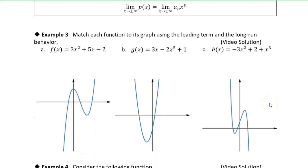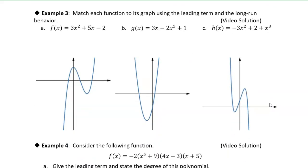So let's take a look at this example. We have some polynomials and we want to match them to the graph. These graphs don't have any scale, they just have a shape. So we're just going to look at the long run behavior of these polynomials in order to determine which graph goes with which polynomial.